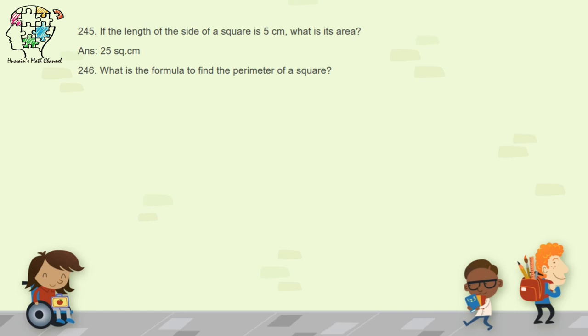Question 246: what is the formula to find the perimeter of a square? The perimeter of a square equals 4 times the side. Here we only write the unit, not square unit, because we are finding perimeter, not area.